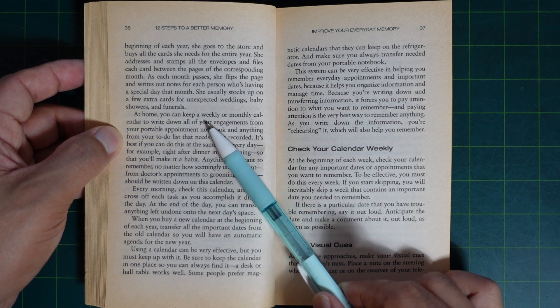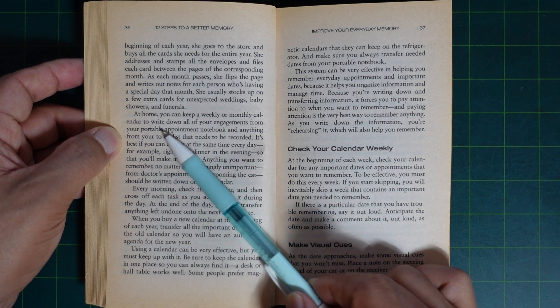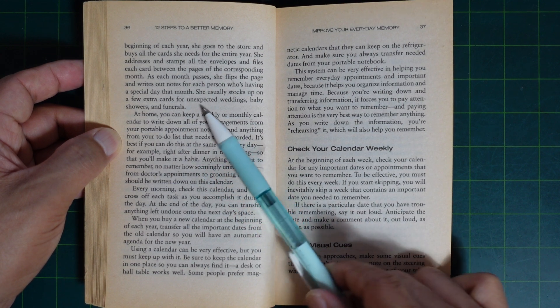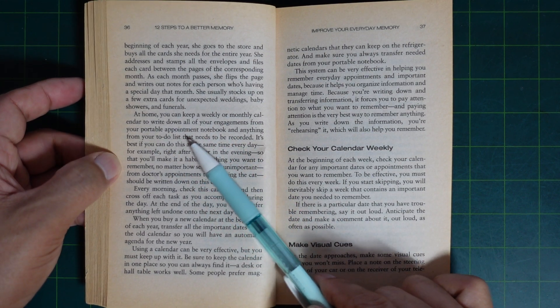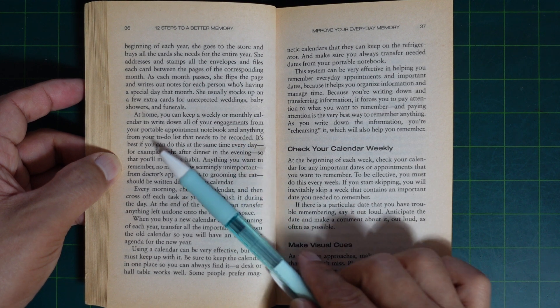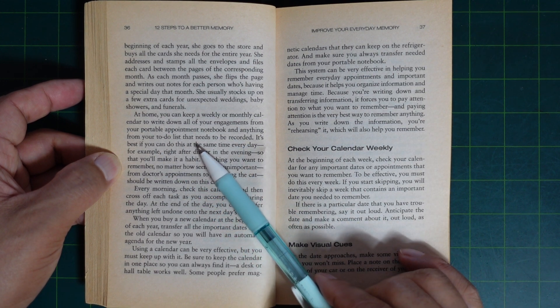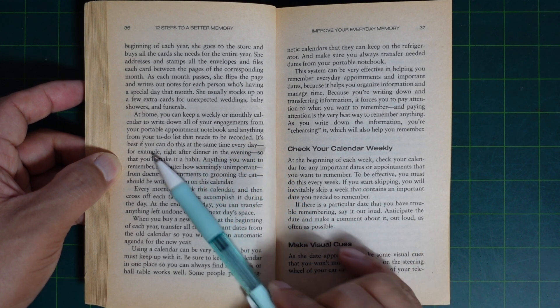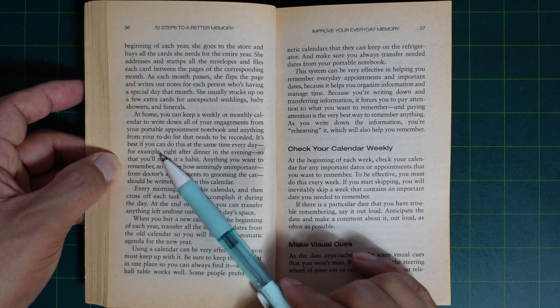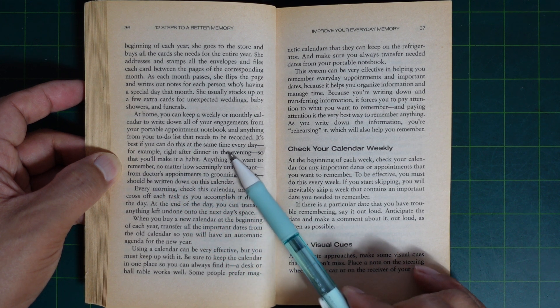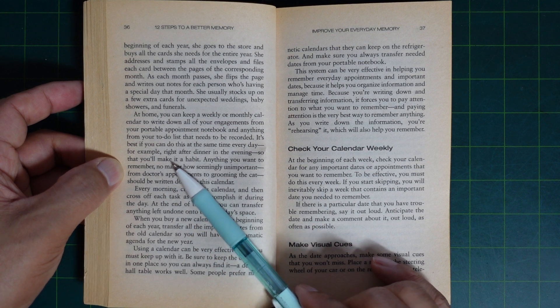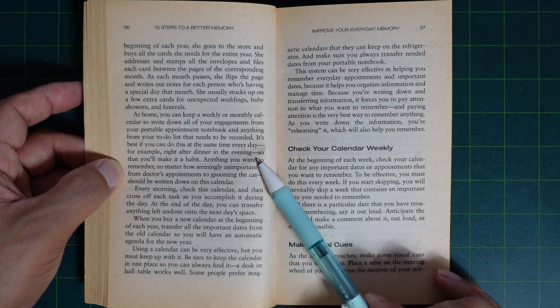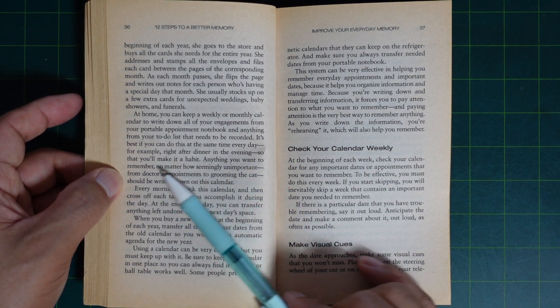At home, you can keep a weekly or monthly calendar to write down all of your engagements from your portable appointment notebook and anything from your to-do list that needs to be recorded. It's best if you can do this at the same time every day, for example, right after dinner in the evening so that it will make it a habit.